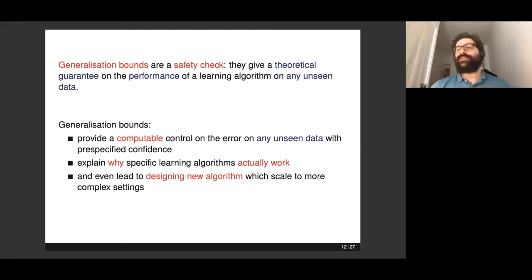This is why we call those generalization bounds. This gives you a formal guarantee on your generalization ability. When you collect new data in a week, a year, or 10 years from now, this is what's going to happen at worst. So in that sense, it really is a safety check. You get this computable control on the error on any unseen data. It could also explain why specific learning algorithms work. If you're able to compute that particular bound for one algorithm and say the worst error I'm going to suffer with that algorithm is 0.1, for example, this gives you a precise guarantee that this particular algorithm will work.